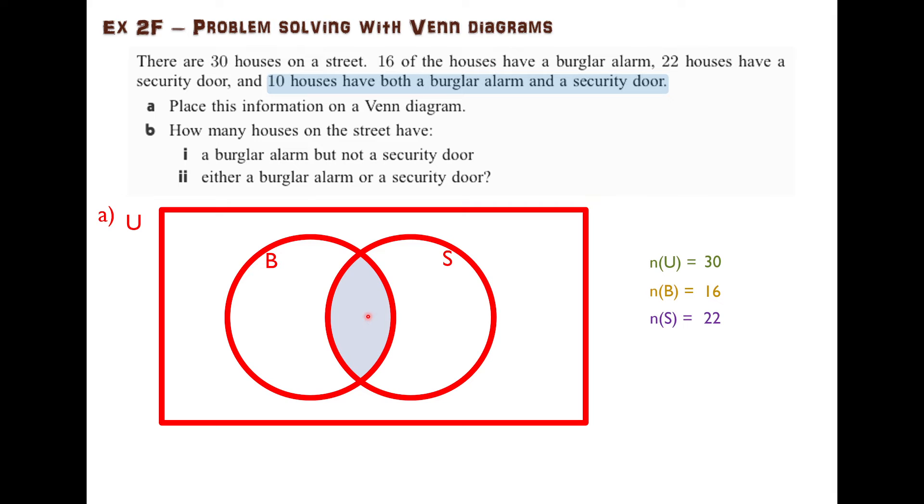The houses that are in the burglar alarm set and also in the security door set. We can write it like this. This means burglar alarm intersection security door. Intersection means the ones that are in both categories.